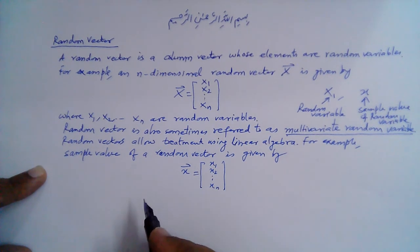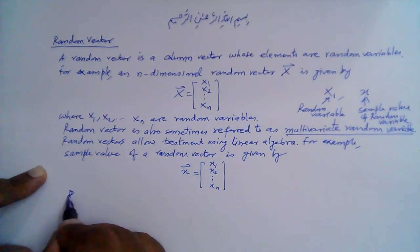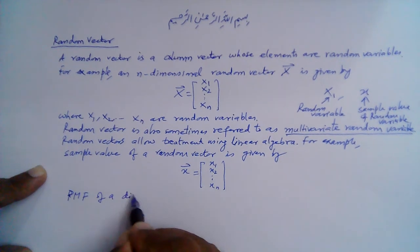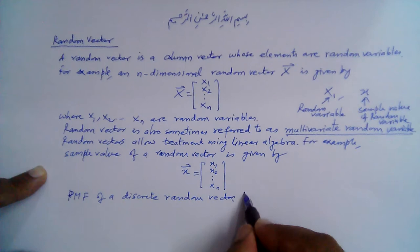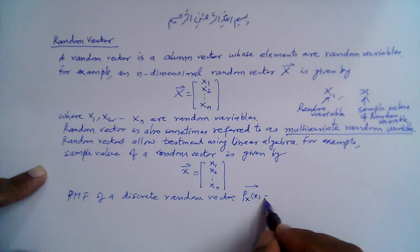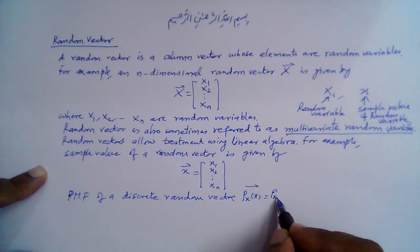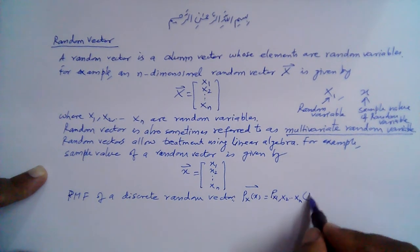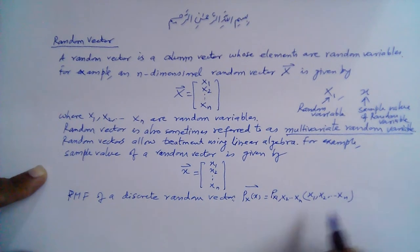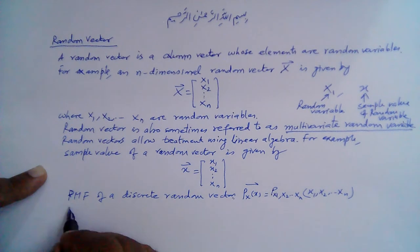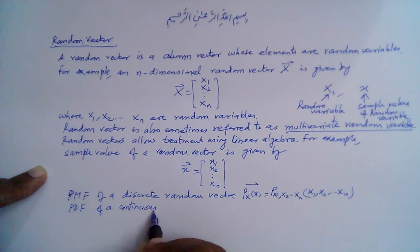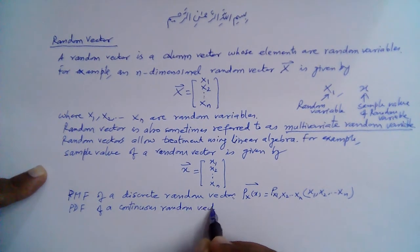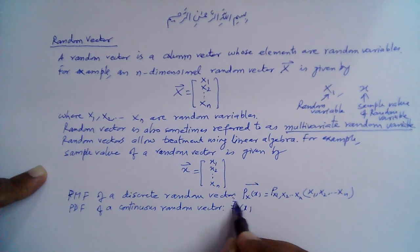Like we have the PDF, PMF, or CDF of a random variable, similarly we can have a PMF, PDF, or CDF of a random vector. In the case of a discrete random vector, the PMF is denoted as p_X of x-bar, and is given by p(x1, x2, ... xn) where x1, x2, ... xn are the corresponding sample values. For a continuous random vector, the probability density function PDF is given by f_X of x-bar.